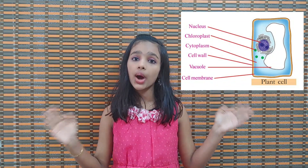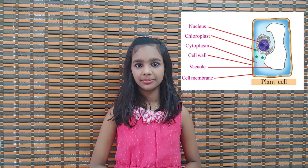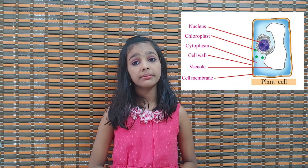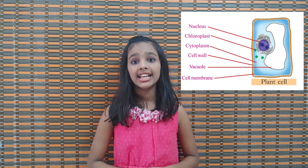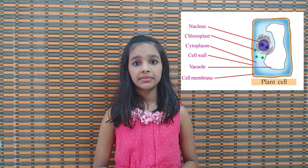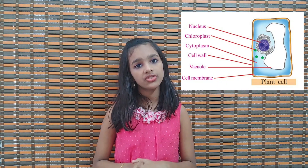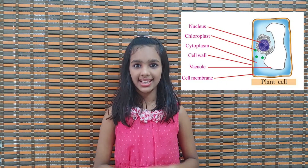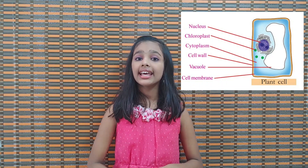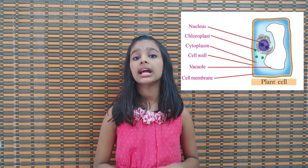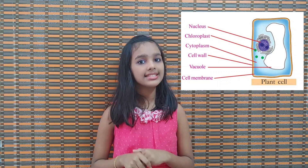The first one is the cell wall. The cell wall is the outer layer of the plant cell. Next is the cell membrane. The cell membrane is the inner covering of the plant cell. Next is the cytoplasm. Cytoplasm is a fluid or matrix filled inside the plant cell. Next is the nucleus. The nucleus is the commanding center of a plant cell.